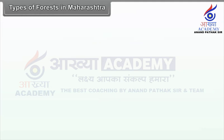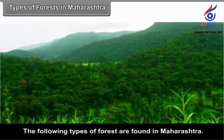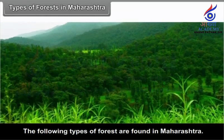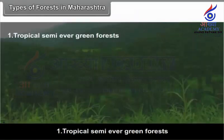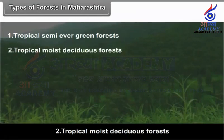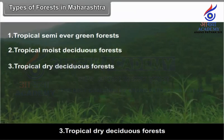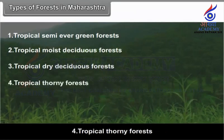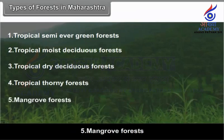Types of Forests in Maharashtra. The following types of forests are found in Maharashtra: 1. Tropical semi-evergreen forests, 2. Tropical moist deciduous forests, 3. Tropical dry deciduous forests, 4. Tropical thorny forests, 5. Mangrove forests.